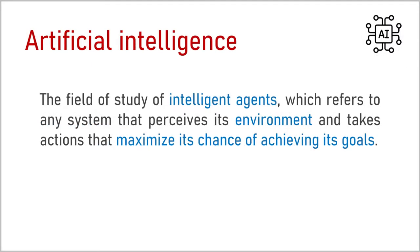Intelligence in computers or other machines is called artificial intelligence. As for the term intelligence, many definitions have been proposed for artificial intelligence. Currently, researchers define artificial intelligence as the field of study of intelligent agents, which refers to any system that perceives its environment and takes actions that maximize its chance of achieving its goals.